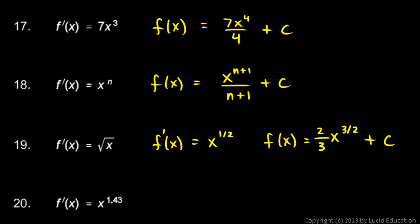Okay, the next one, x to the 1.43, well this is easy. The power rule works even if you have fractional or irrational powers even. So if f prime is x to the 1.43, then f is x to the 2.43 over the new power, 2.43, plus c.